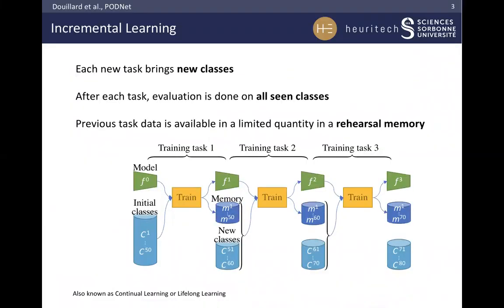In incremental learning, we learn multiple tasks. Each new task is made of new classes. After each task, we evaluate our model on all seen classes. Our metric is called Average Incremental Accuracy. It is the average of all accuracies computed after each task. Therefore, our model cannot simply be good at the last task. It must be good after each task.